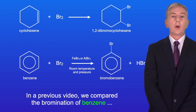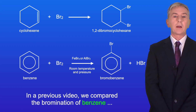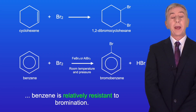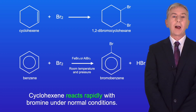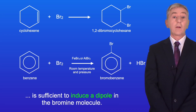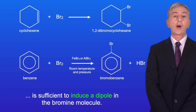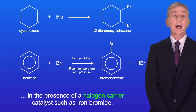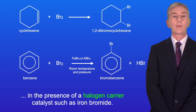In a previous video, we compared the bromination of benzene with the bromination of an alkene, such as cyclohexene. Remember that compared to alkenes, benzene is relatively resistant to bromination. Cyclohexene reacts rapidly with bromine under normal conditions, because the electron density in the double bond is sufficient to induce a dipole in the bromine molecule. However, benzene will only react with bromine in the presence of a halogen carrier catalyst such as iron bromide.